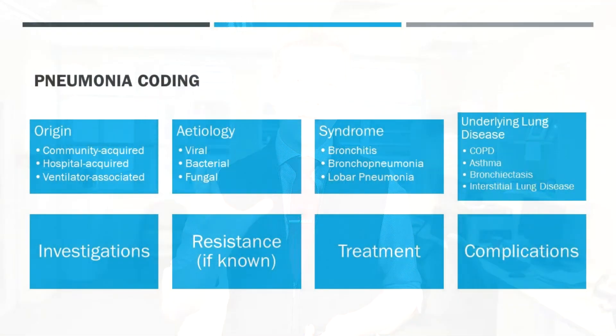In terms of pneumonia, we've produced a sticker, and these are the different areas we would think about when coding pneumonia. First, the origin: community, hospital, or ventilator-associated — mostly it's going to be community or hospital. Healthcare-associated is a term that can be coded but isn't always helpful, as treatment shouldn't differ greatly from community-acquired. Community makes it very clear the patient acquired the infection outside the hospital, and it's coded and funded very differently from hospital-acquired.